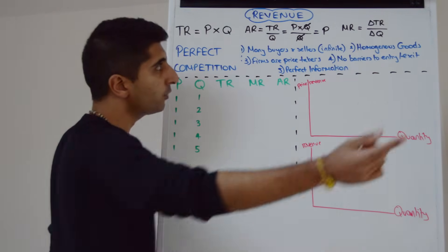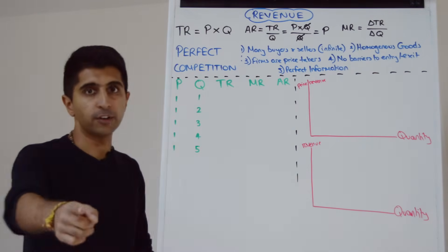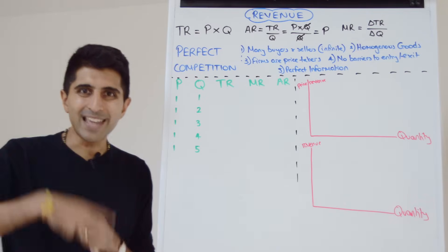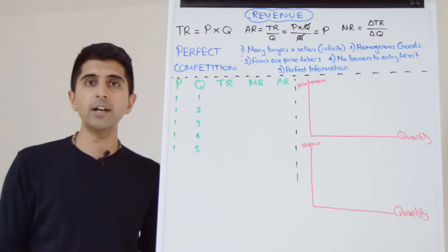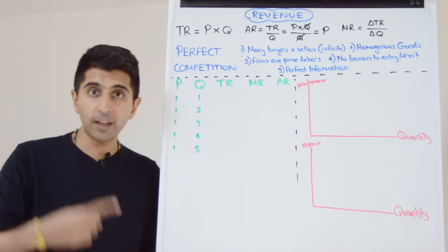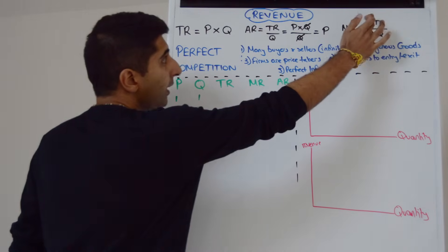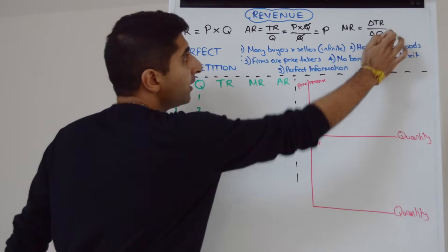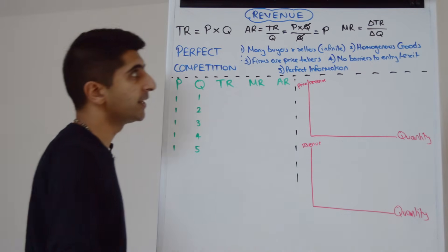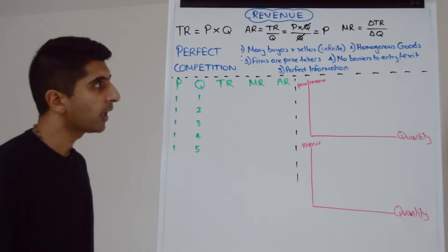Marginal revenue — marginal just means extra — so in this case the extra revenue generated when we sell more output. Therefore the equation is the change in total revenue divided by the change in quantity.